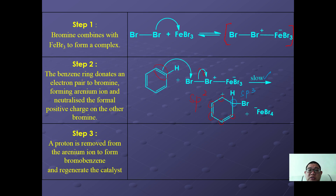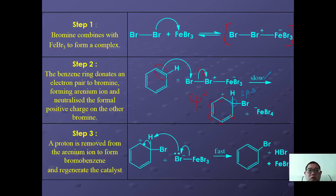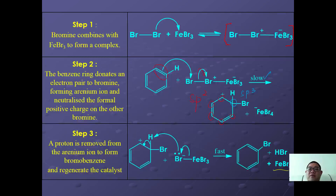Finally, the bromide ion complex attacks the hydrogen for deprotonation. This deprotonation allows the pi bonds to reform and neutralizes the positive charge, eventually forming bromobenzene. HBr and FeBr3 are regenerated as the catalyst. This is the fast step of the reaction.